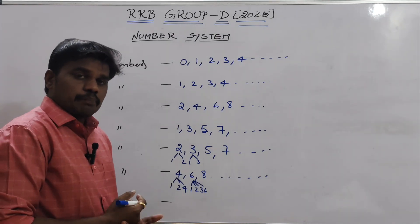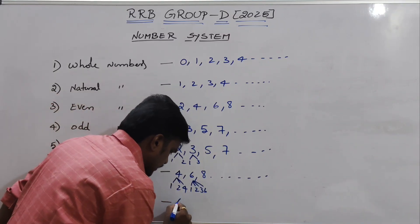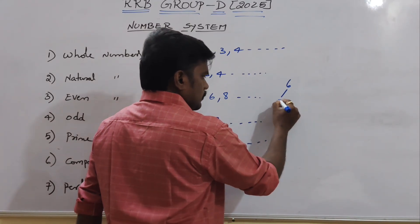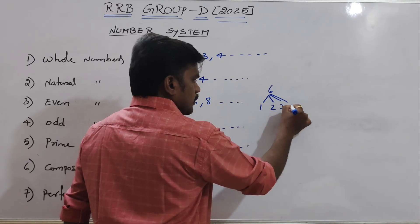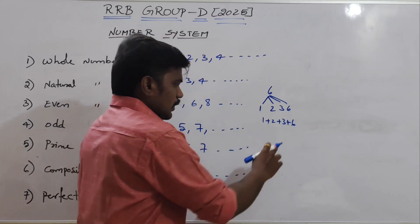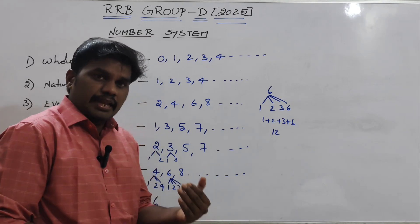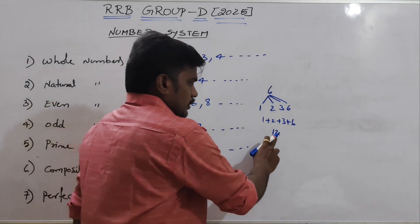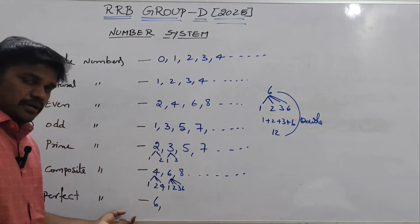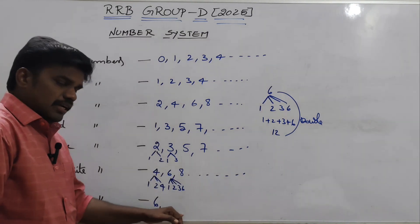Coming to perfect numbers — compared to all other numbers, these are a very different kind. Let us take 6 as an example. The factors of 6 are 1, 2, 3, and 6. Add them: 1 plus 2 plus 3 plus 6 equals 12. Whenever the sum of all factors equals double the number, that kind of number is called a perfect number.